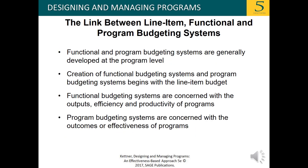There is a link between line item, functional, and program budgeting systems. Functional and program budgeting systems are generally developed at the program level, and their creation begins with the line item budget. Functional budgeting systems are concerned with the outputs, efficiency, and productivity of programs, while program budgeting systems are concerned with the outcomes or effectiveness of programs.